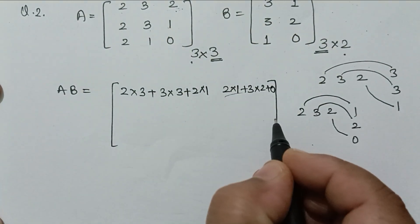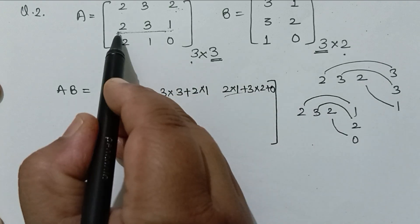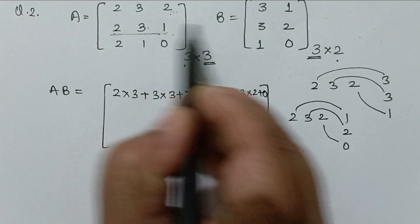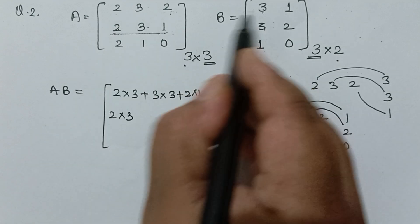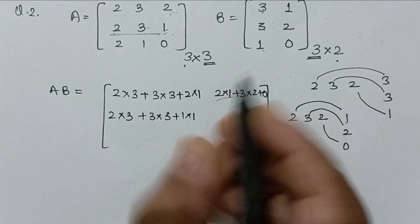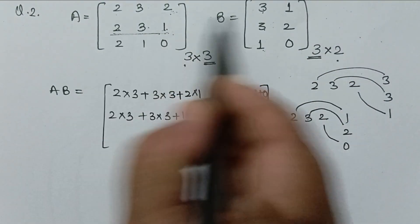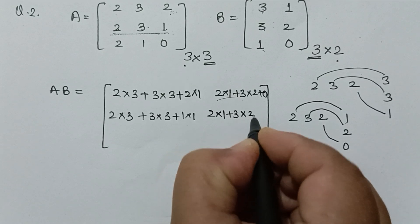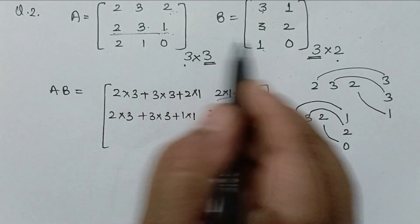For the next row, we use the second row. We multiply the second row with the first column and the second row with the second column. Second row with first column gives 2x3 plus 3x3 plus 1x1. For the next element, second row with second column gives 2x1 plus 3x2 plus 1x0, which is 0.